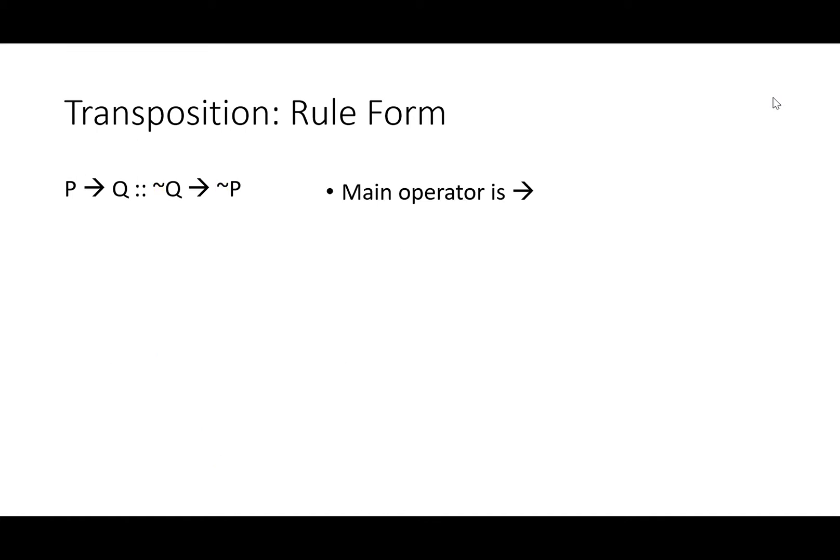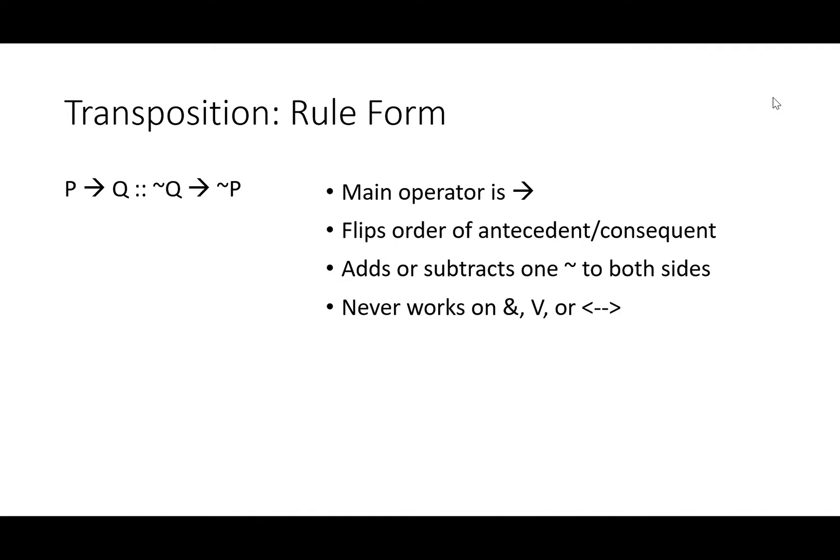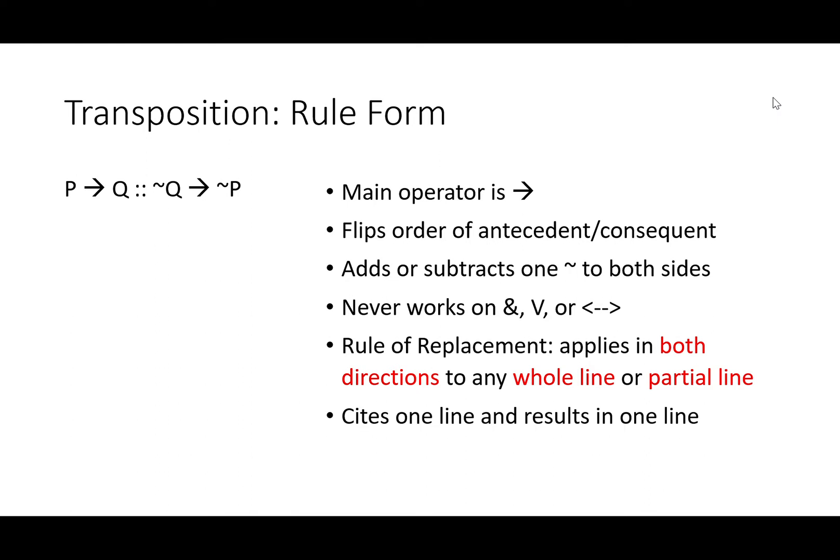With transposition, the main operator is always an arrow. It flips the order of the antecedent and consequent and adds or subtracts exactly one negation to both sides. It never works on ampersand, V, or if and only if. As a rule of replacement, it applies in both directions to any whole or partial line. It cites one line and results in one line.